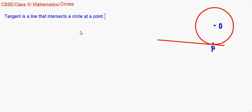It's a line that intersects a circle at a point, at one point. Now there can be another concept which is secant. Let me just write it. Secant is a line that intersects the circle at two points.